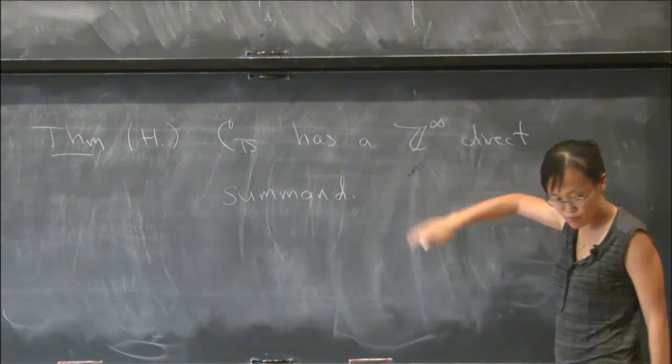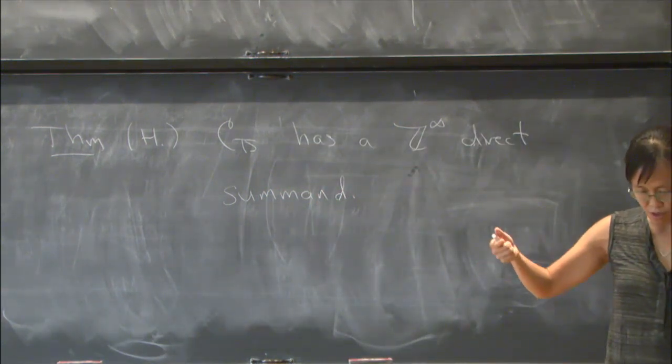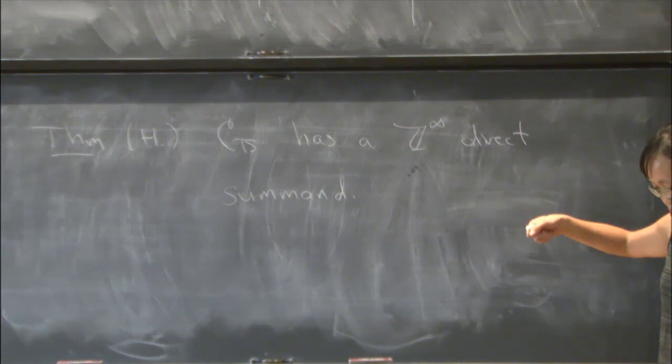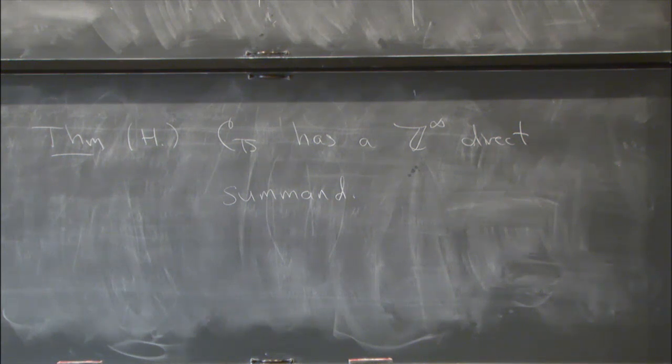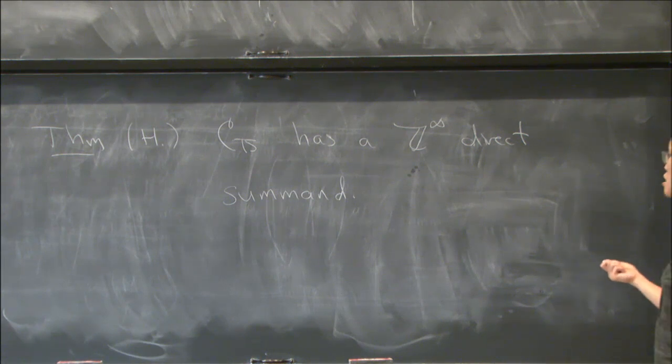And so this proof relies on the knot invariant—the knot Floer homology, the knot Floer complex, which is a variant of Heegaard Floer homology. It's a filtered chain complex that you associate to a knot. The filtered chain homotopy type of this complex is a knot invariant, but within the filtered chain homotopy type, you can extract various different numerical invariants that are concordance invariants.